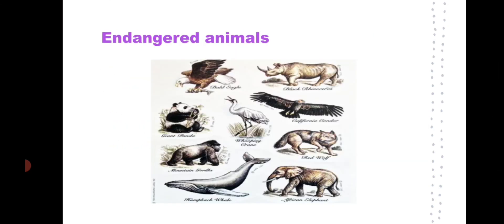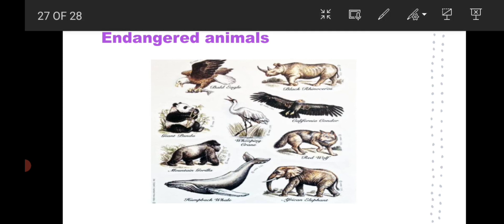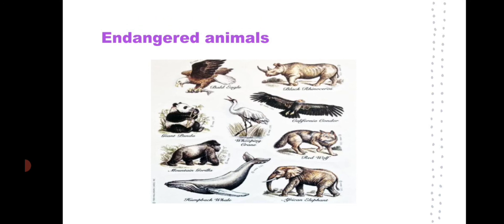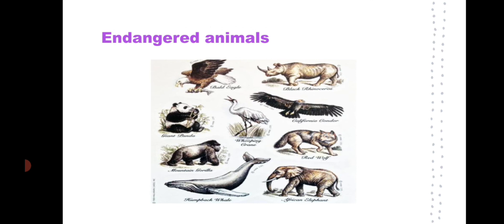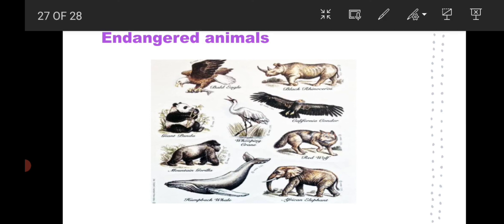Endangered animals are those which are at the stage of becoming extinct — they exist in very small numbers. Some endangered animals include the bald eagle, black rhinoceros, giant panda, whooping crane, California condor, gorilla, whale, African elephant, and red wolf. All these animals are at risk of extinction, so we must protect them and their habitat.